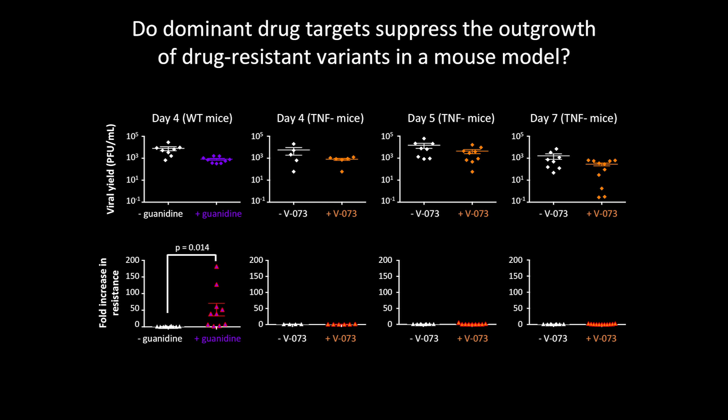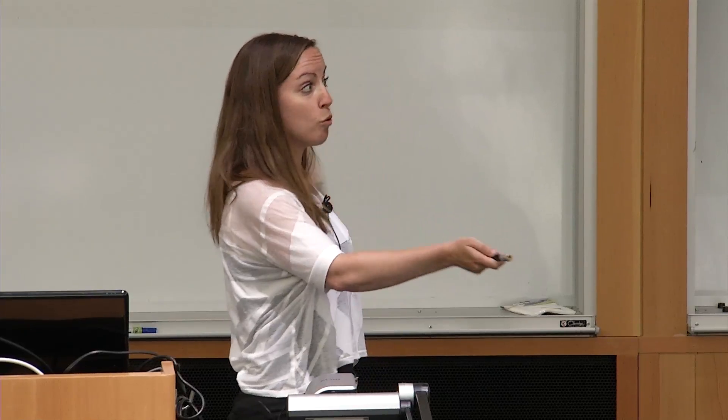Here's that mouse data. On the top, we're looking at total viral yield in mouse muscles after intramuscular infection, treated either with guanidine or with VO73. Both drugs actually inhibit virus growth compared to controls, confirming selective pressure on the virus populations. The question is whether that causes drug resistance to emerge. At just four days post-infection, guanidine shows a significant increase in frequency of guanidine-resistant virus. But on days four, five, and out to seven days post-infection, we never see an increase in the frequency of VO73-resistant variants. We conclude that targeting the capsid suppresses the emergence of drug-resistant virus for up to a week of infection.